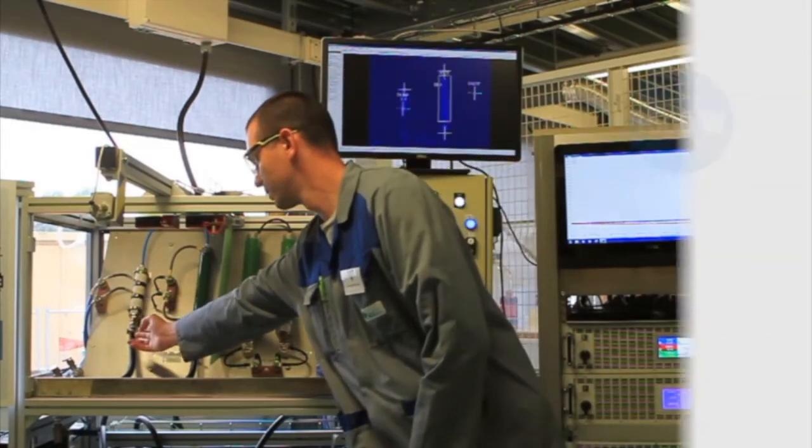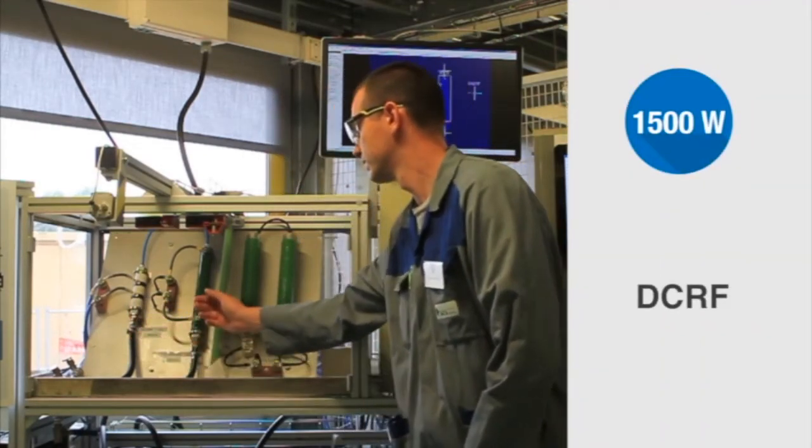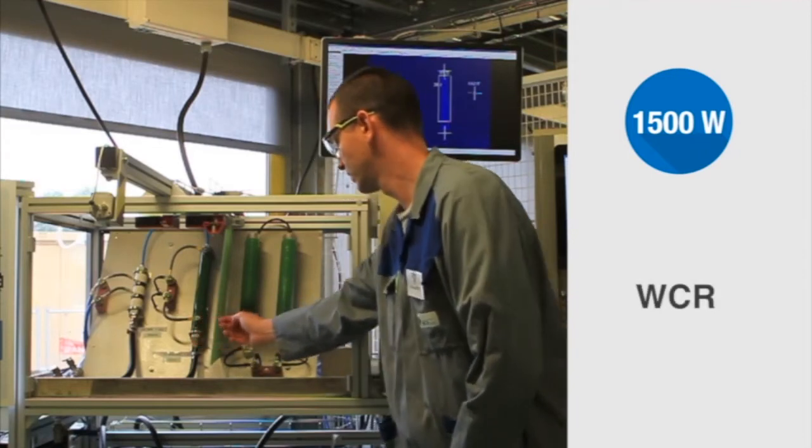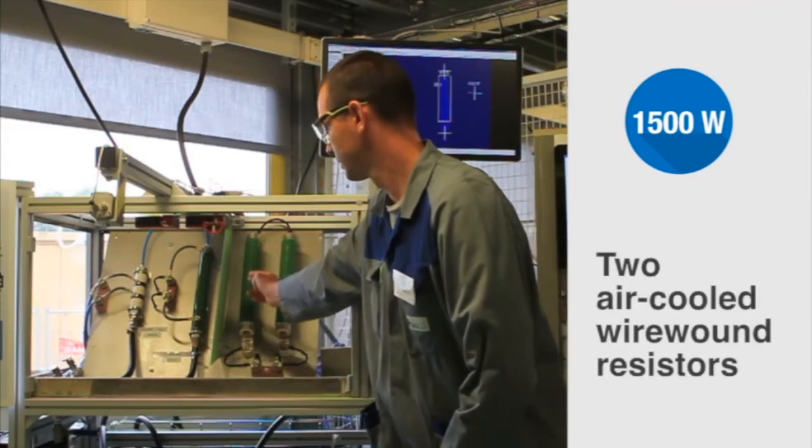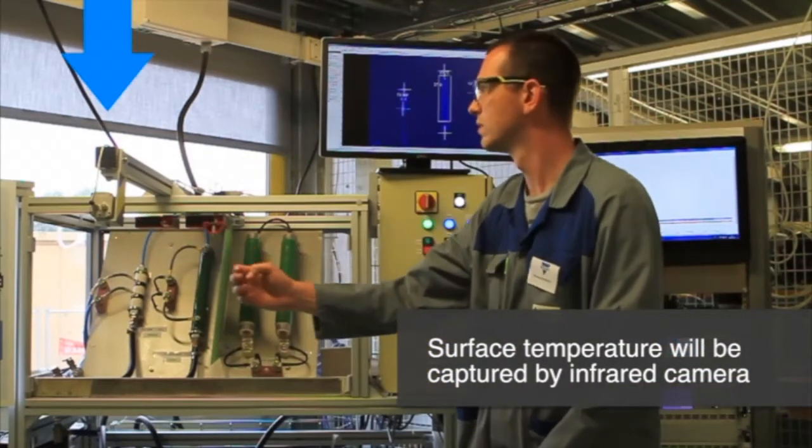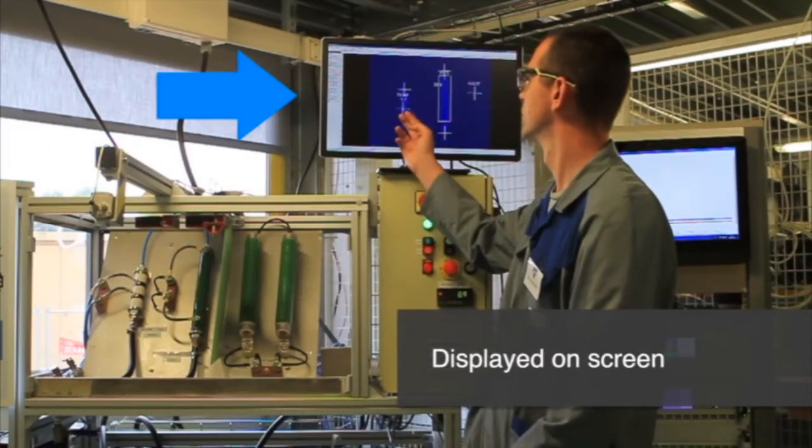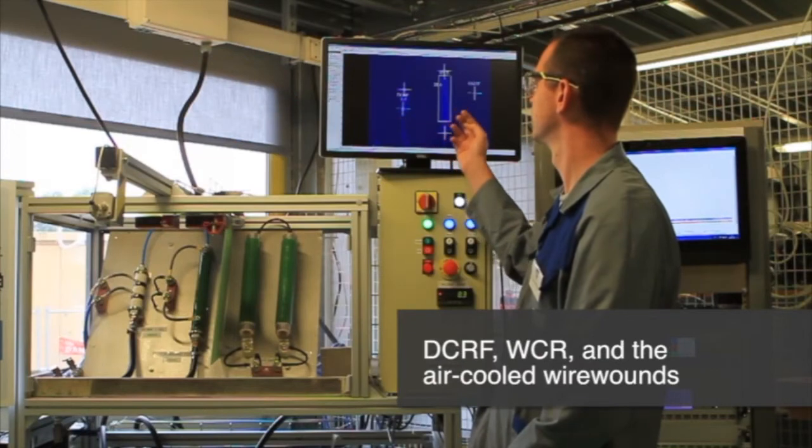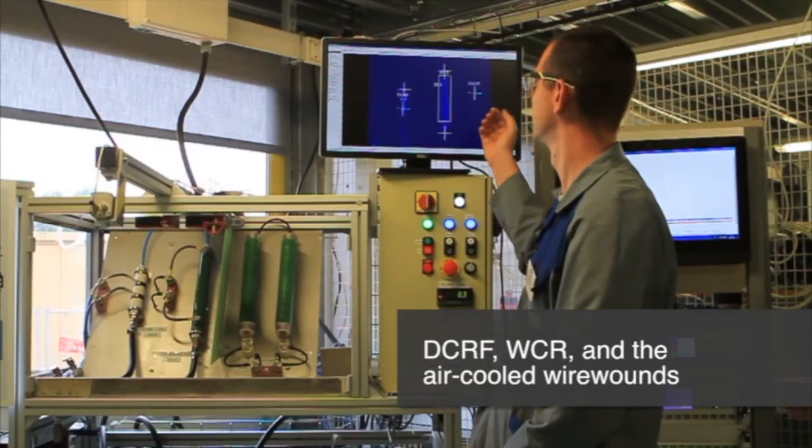The same power 1500 watts will be applied on the DCRF, on the WCR and on the two air cooled wire wound resistors. The surface temperature will be captured by infrared camera and displayed on this screen, DCRF, WCR and one for the air cooled wire wound.